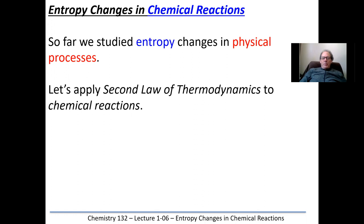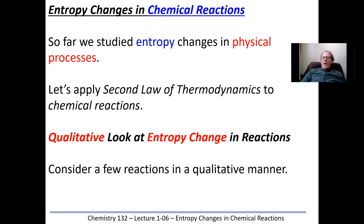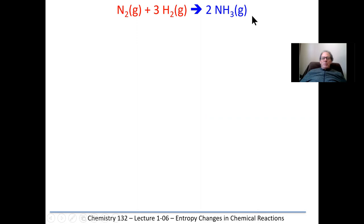We're going to apply the second law of thermodynamics to chemical reactions. Qualitatively, we're going to take a look at the entropy change in those reactions. Let's look at this one — one of the most important chemical reactions to modern society. It is responsible for the Green Revolution. Haber and Bosch figured out how to take nitrogen out of the air and combine it with hydrogen to make ammonia, which is a fertilizer.